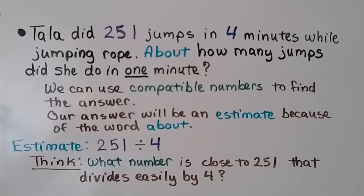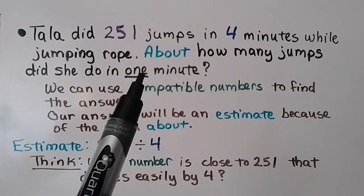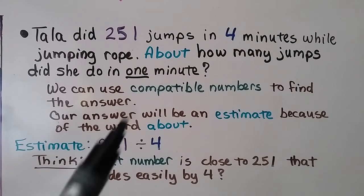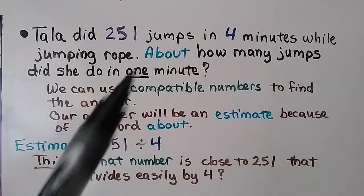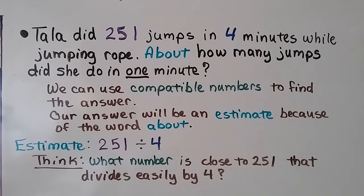Tala did 251 jumps in 4 minutes while jumping rope. About how many jumps did she do in 1 minute? This tells us how many she did in 4 minutes; we have to find 1 minute. We can use compatible numbers to find the answer, and our answer will be an estimate because of the word 'about.' We need to estimate 251 divided by 4.